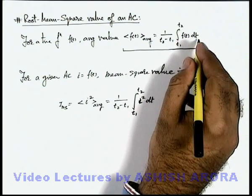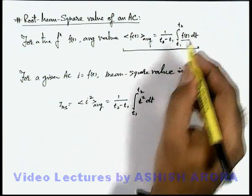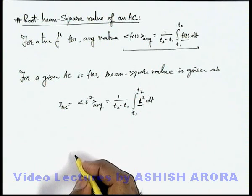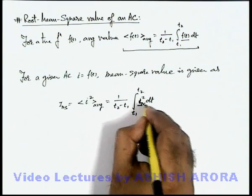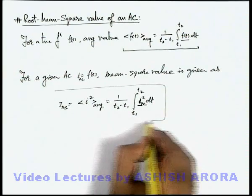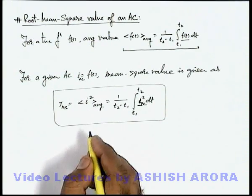We are using the same average function, not for calculation of current, but for calculation of average of square of the current. This is the AC current which is given to us, so this is the way how we can calculate the mean square value.